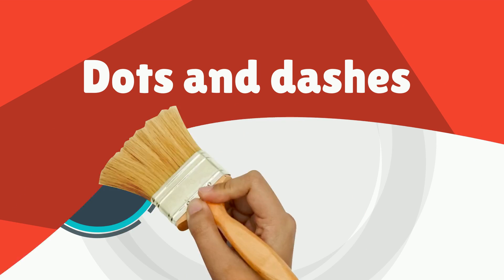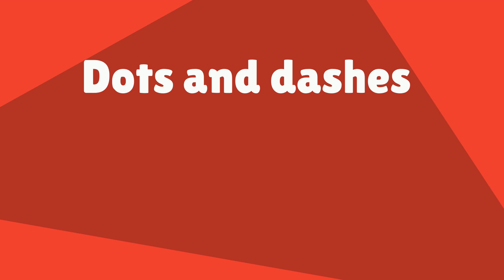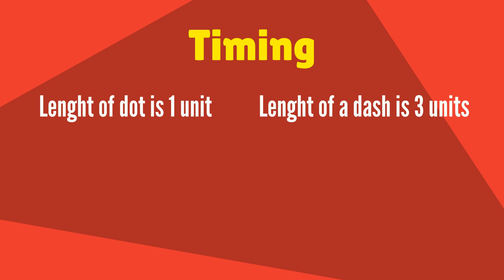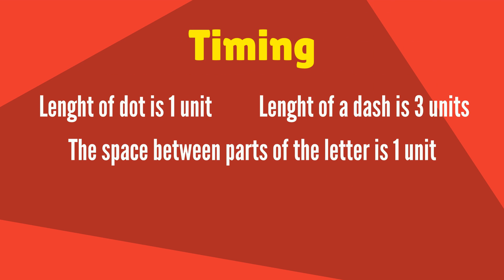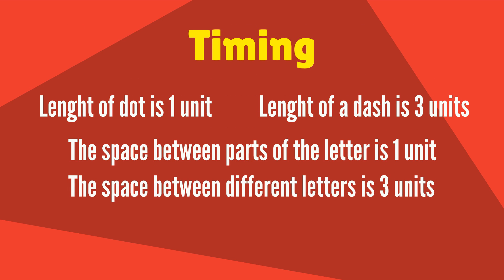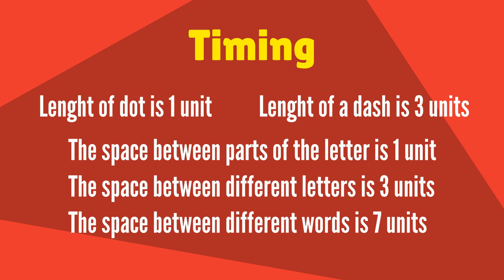Morse code is a sequence of short and long signals called dots and dashes. It is a dot and it is a dash. The length of a dot is one unit, the length of a dash is three units. The space between parts of the same letter is one unit, while the space between different letters is three units, and between words seven units.